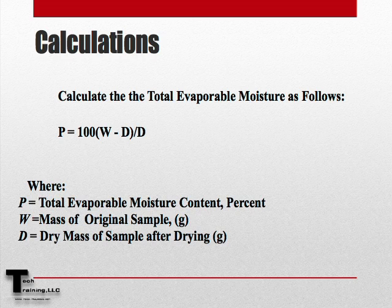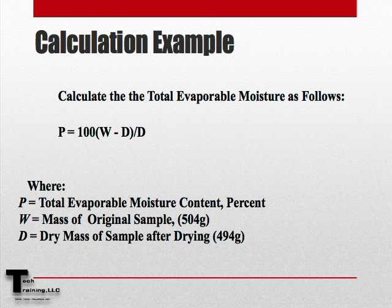We can now calculate the total evaporable moisture content by drying via the following equation, where P is the total evaporable moisture content in percent, W is the weight of the original sample in grams, and D is the mass of the dry sample in grams. As an example, let's assume that the mass of the original sample was 504 grams and the mass of the sample after drying was 494 grams.